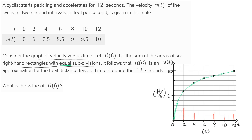For example, for this first rectangle — to make it right-handed, we look at the right side: at two seconds, velocity is six feet per second, so that's the height of our rectangle. A left-handed rectangle would instead use the left-hand side value: for this first rectangle the function is zero, so the height is zero. The next left-hand rectangle uses the value at two seconds, which is six. But they're telling us to do right-handed rectangles, so let's do that.